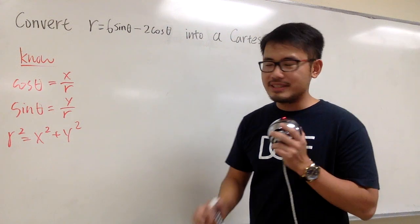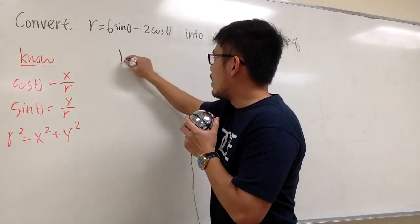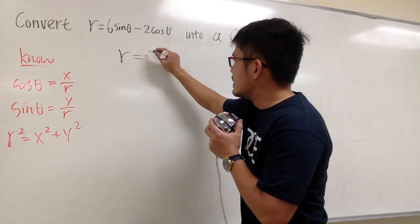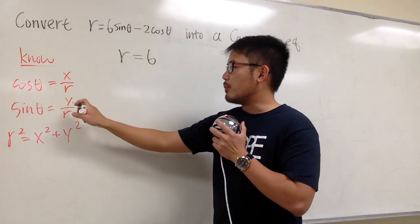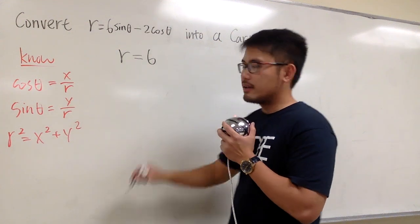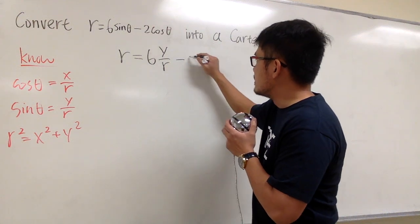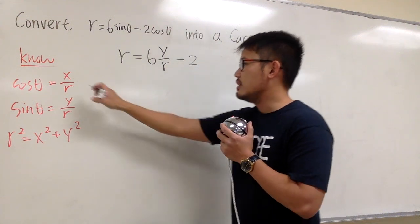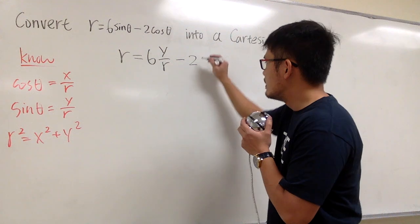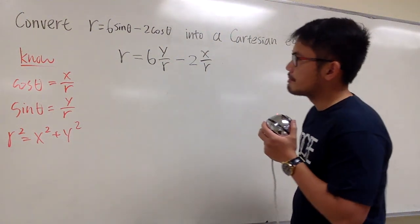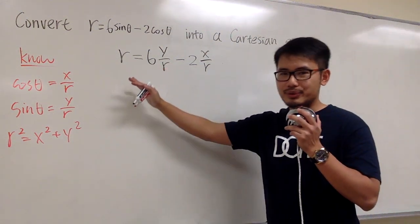Let's do that first. So we have r equals to the 6 stays the same, but then for sine theta, I will put in y over r. And then we minus the 2 stays the same, cosine theta is x over r. So this is the first thing that we should do.